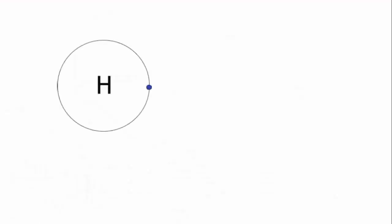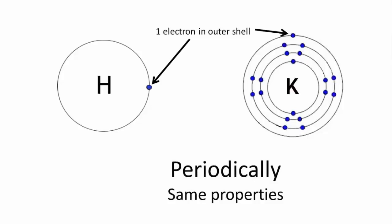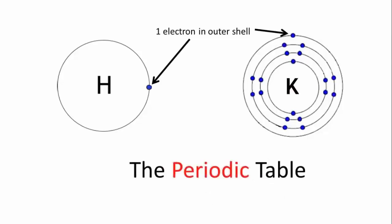As you move from the light elements to the heavy elements, you keep periodically coming across the same properties, which is why it's called the periodic table.